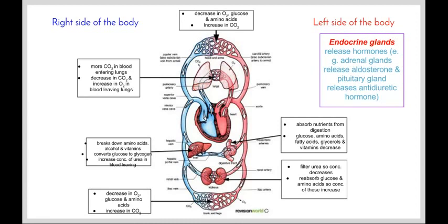So we'll recall that our endocrine glands release hormones. So in particular, the adrenal glands release aldosterone, which we'll be having a look at a little bit later in the topic when we look at the kidneys. And the pituitary gland releases antidiuretic hormone. Again, we'll be looking at when we look at the kidneys. So the reason why they're there in their own little box is as the blood leaves the endocrine glands, we obviously have a higher concentration of these hormones than the blood entering.